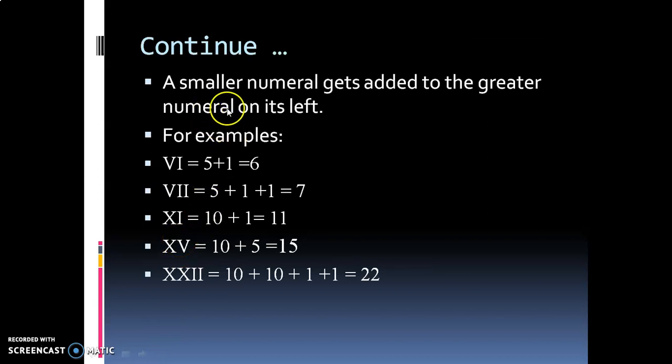Now a smaller numeral gets added to the greater numeral on its left. For examples: VI = 5+1 = 6. VII = 5+1+1 = 7. XI = 10+1 = 11. XV = 10+5 = 15. XXII = 10+10+1+1 = 22.